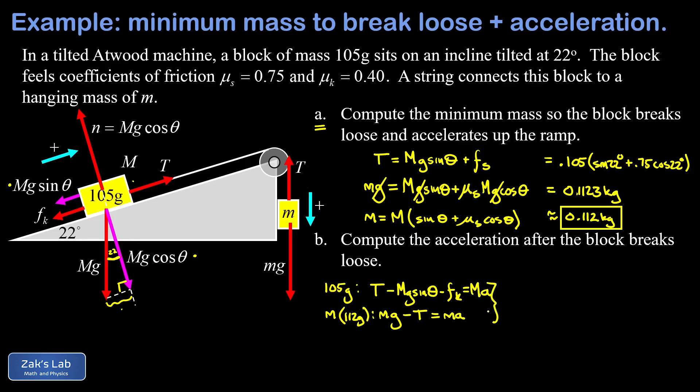Now this is a system of two equations and two unknowns, and it's actually set up really conveniently to use elimination to get rid of the unknown tension. All we do is add the left hand sides of the equations, add the right hand sides of the equations, and this gives me little mg minus big mg sine theta minus the kinetic friction force. I'll go ahead and plug in the details now. That's mu k times the normal force, which is big mg cosine theta, and this is all equal to big m plus little m times a.